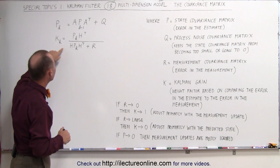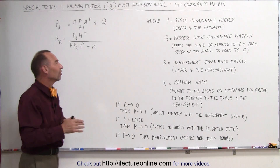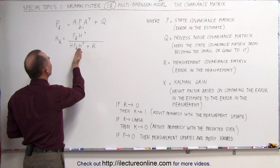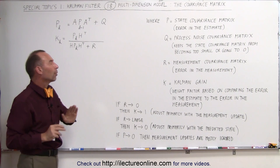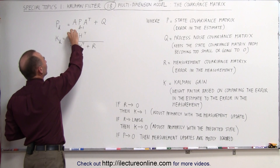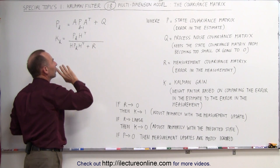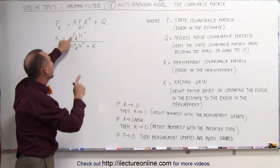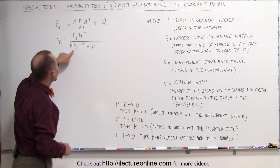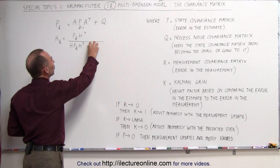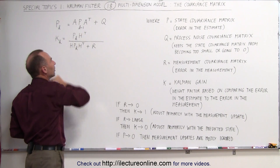Looking at the Kalman gain equation, the matrices A, A-transpose, H, and H-transpose are simply matrices that allow the format of one matrix to fall into the format of another — we'll get into those details later. The key point is the ratio: the Kalman gain is the error in the estimation divided by the error in the estimation plus the error in the observation. If the observation error is large, this fraction becomes small and the Kalman gain becomes small. If the observation error is small, the fraction becomes large and the Kalman gain becomes large.